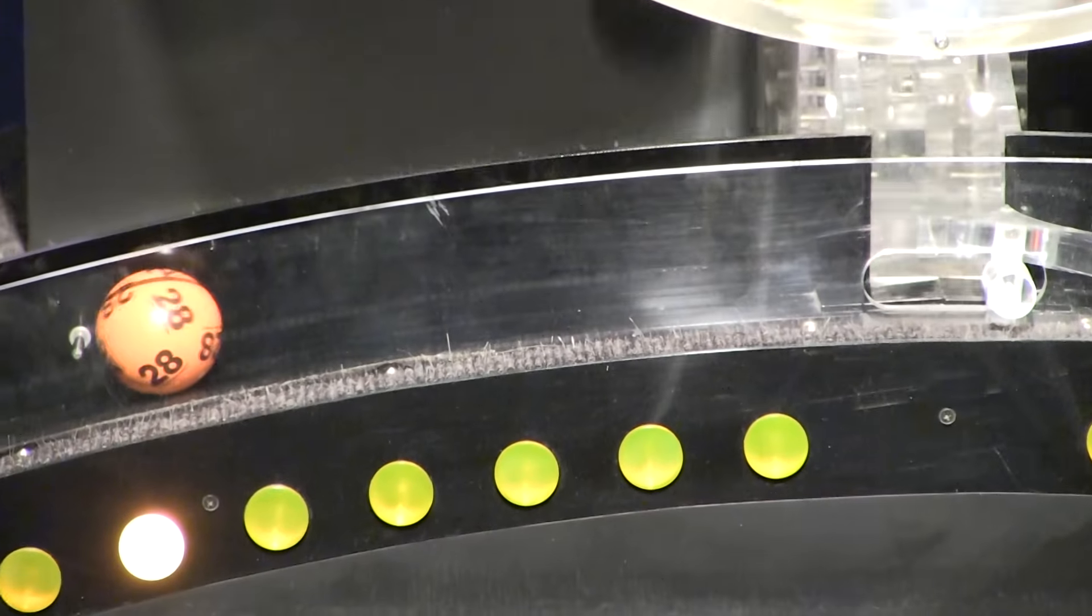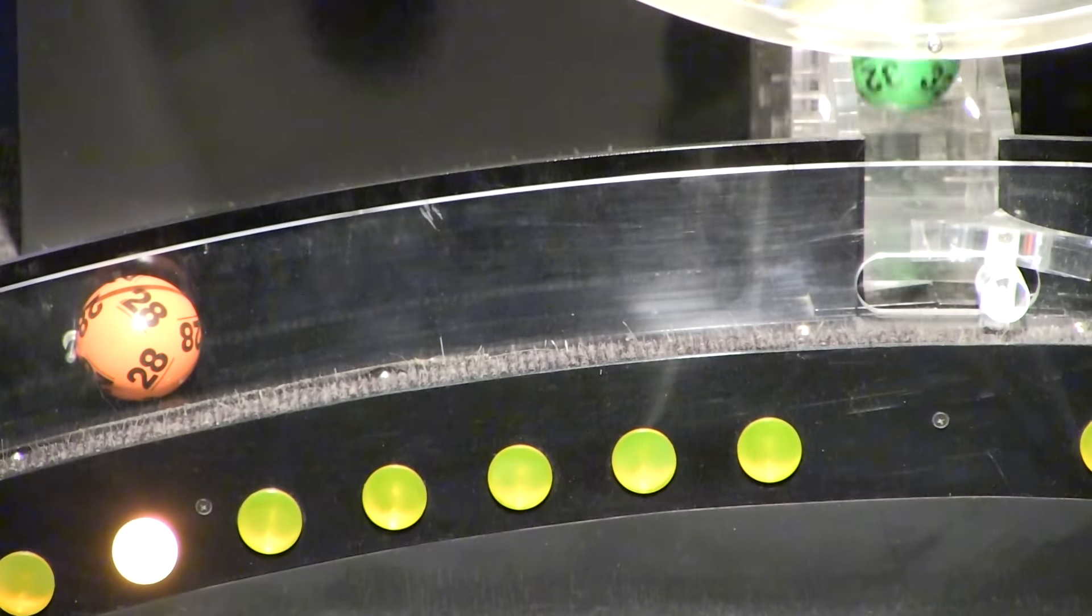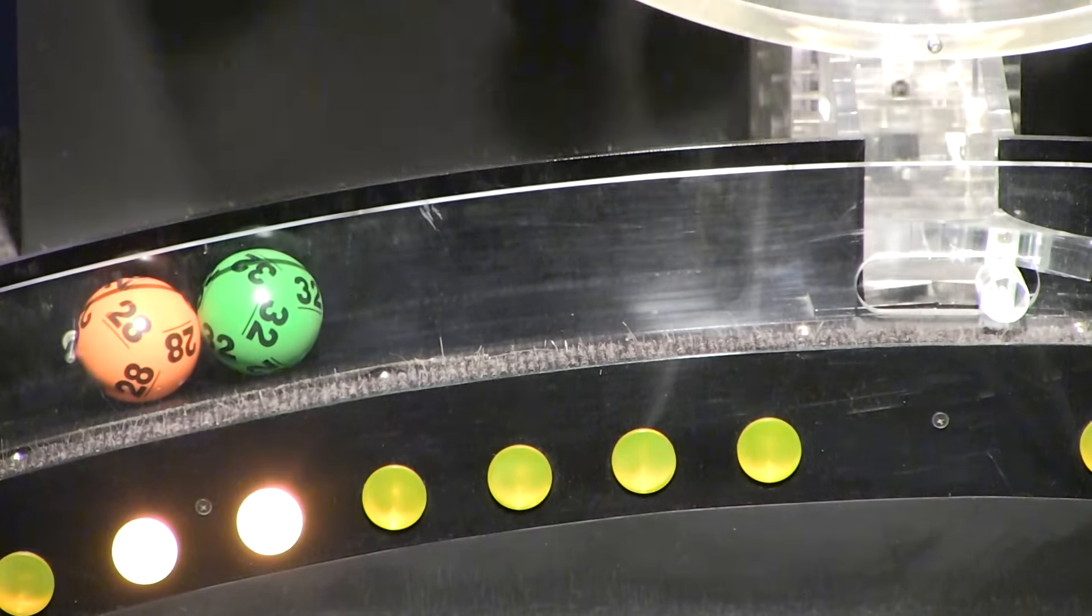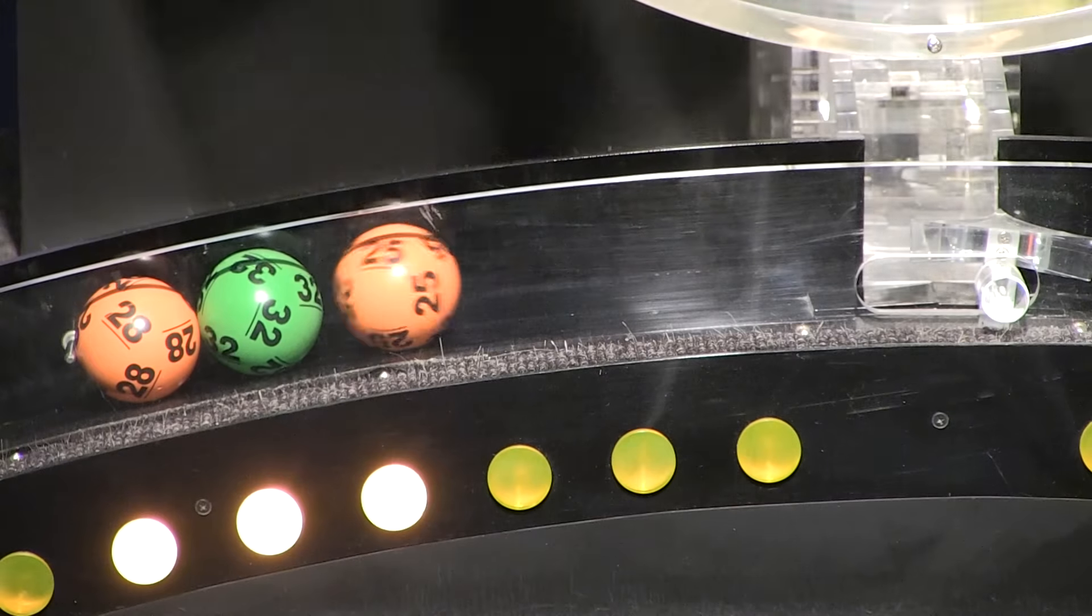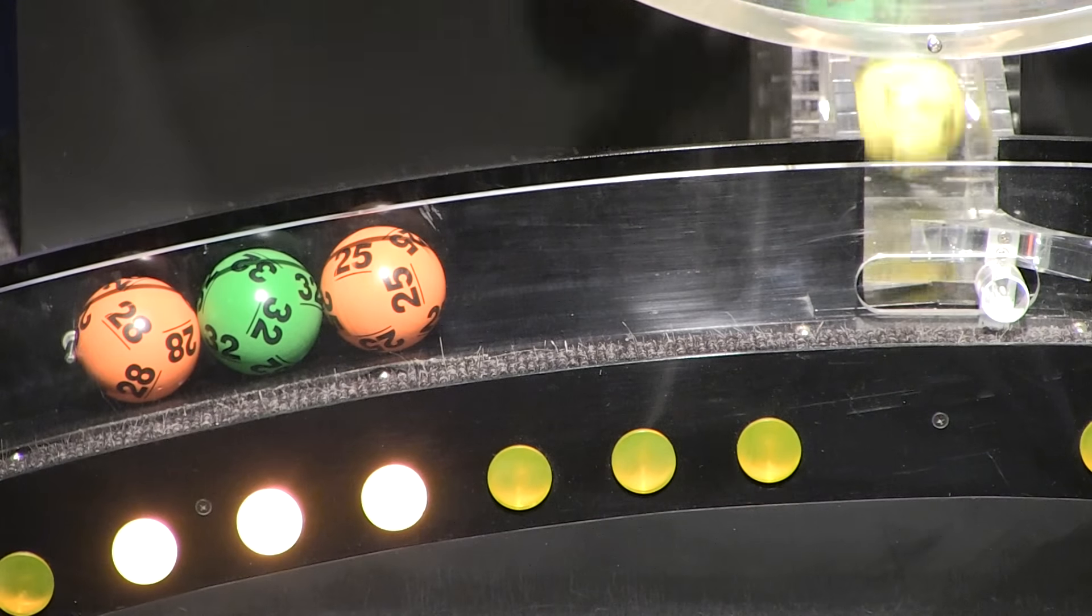Our first number is 28. Rolling right behind that is 32. That's followed by 25. If you've matched these three numbers, you've already won a prize.